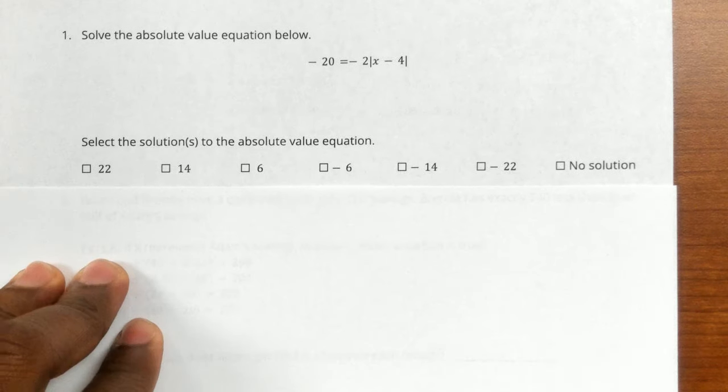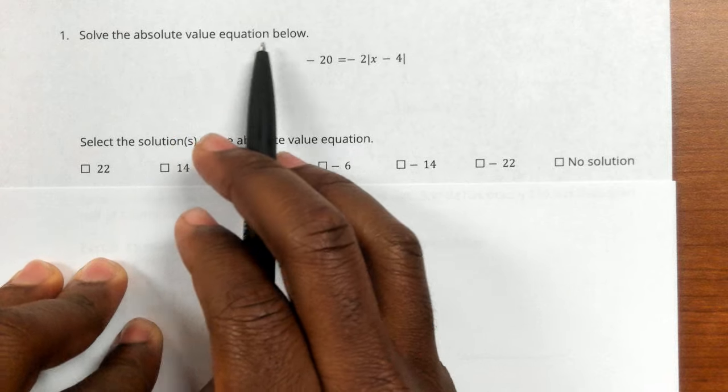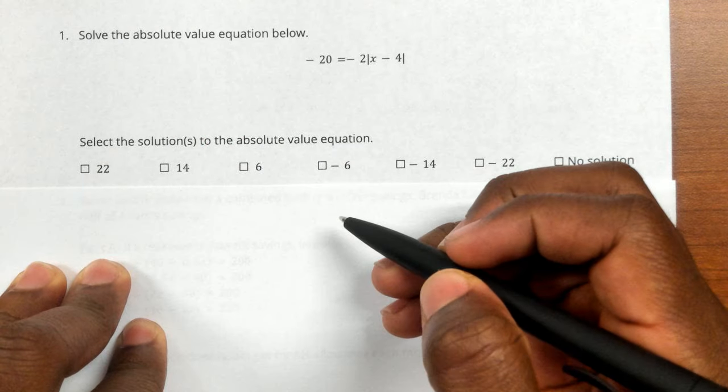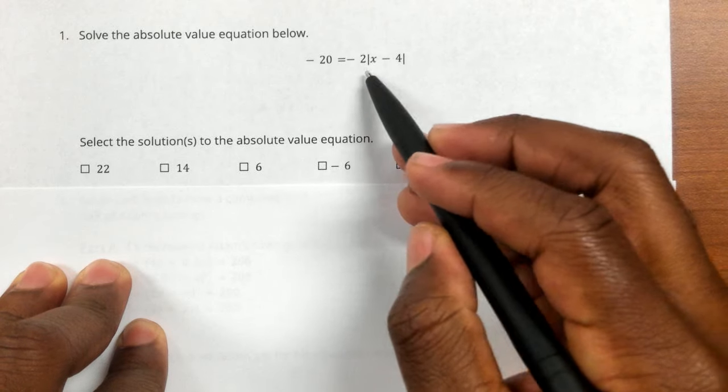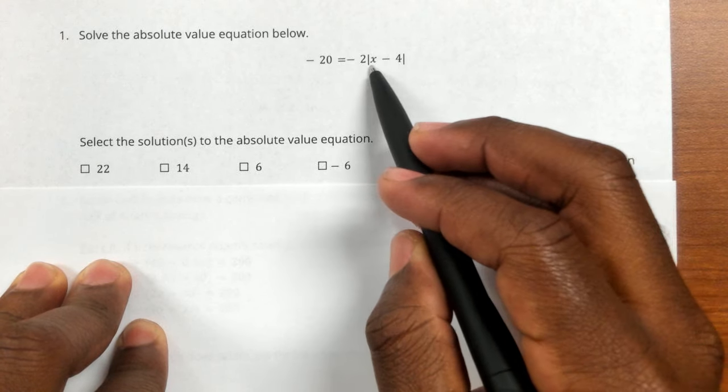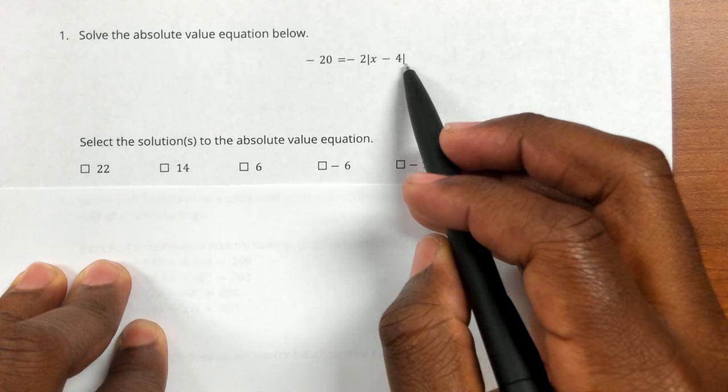Question number one, so question number one was to solve the absolute value equation below. So whenever you're doing an absolute value equation, the first thing you need to do is make sure that your absolute value is isolated. This absolute value needs to be all alone.